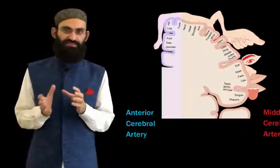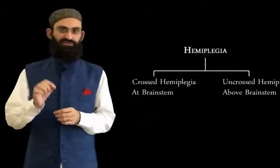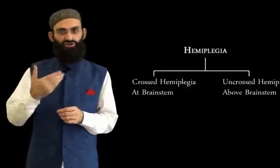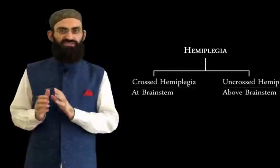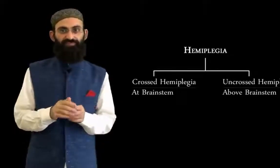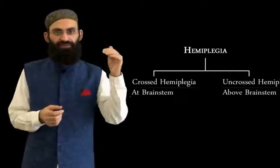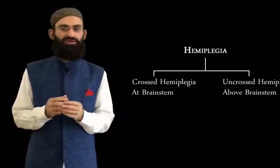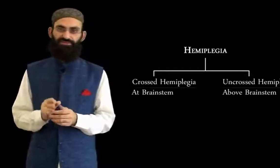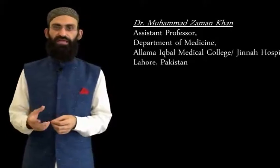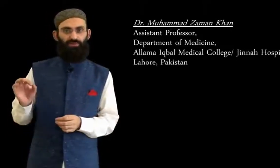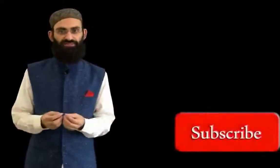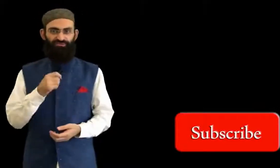To sum up the discussion of hemiplegia: in case of hemiplegia, first determine whether it is crossed or uncrossed. Crossed hemiplegia means the lesion is at the level of the brainstem. Uncrossed hemiplegia means the lesion is above the brainstem — either internal capsule or cerebral cortex — and based on cortical dysfunction, we can differentiate between these two. The purpose of this educational video was to give you fundamental knowledge of localization of a neurological lesion. It does not cover every aspect, but with this knowledge you can expand further. Keep on watching and do give us your feedback.